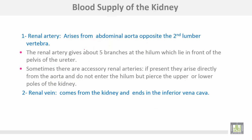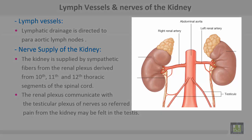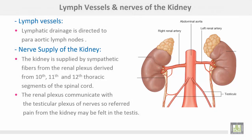The blood supply of the kidney: number one, the renal artery arises from the abdominal aorta opposite the second lumbar vertebra. The renal artery gives about five branches at the hilum to lie in front of the pelvis of the ureter. Sometimes there are accessory renal arteries; if present, they arise directly from the aorta and do not enter the hilum but pierce the upper or lower poles of the kidney. The renal vein drains the kidney into the inferior vena cava. Lymphatic drainage is directed to para-aortic lymph nodes.